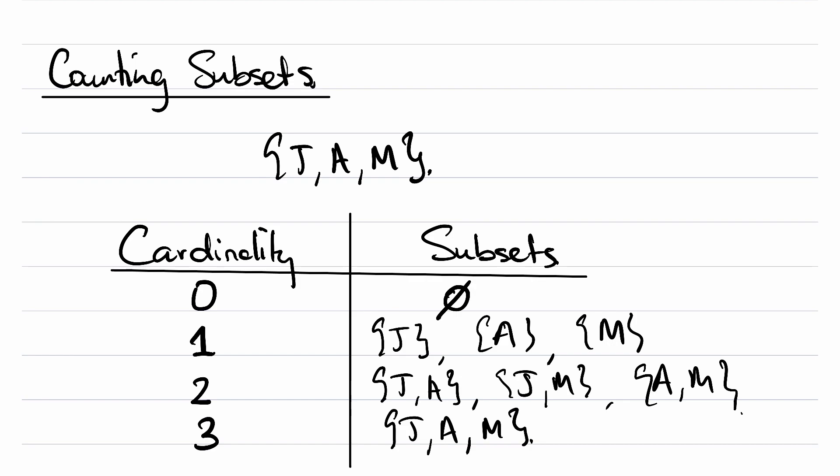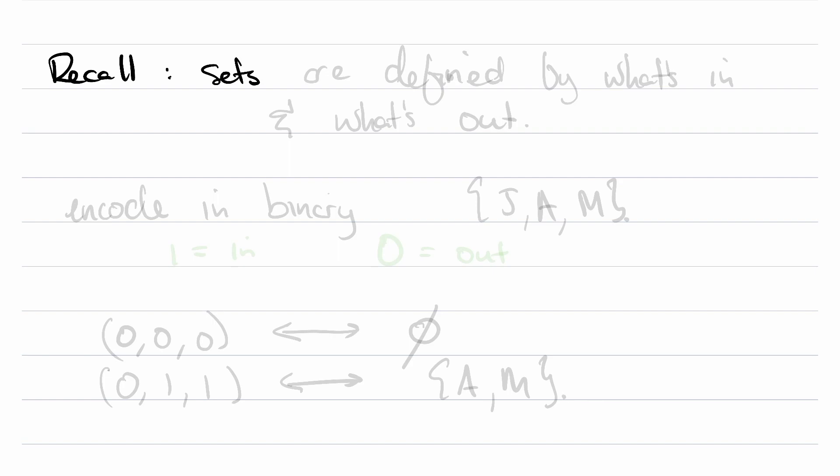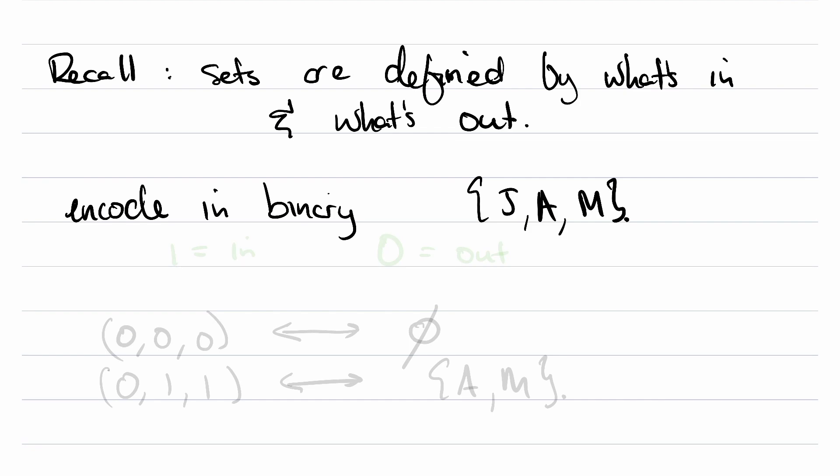I think these are the only ways that you can do that. And then you can see the subset of cardinality three, which is the whole set. How many do we have? One, two, three, four, five, six, seven, eight. Now, there must be a systematic way of doing this. And part of combinatorics and the beauty of combinatorics is just looking at something the right way so that we can count them more easily. So the first thing I want to remind you of is that sets are defined by what's in and what's out. So we are going to encode this in binary.